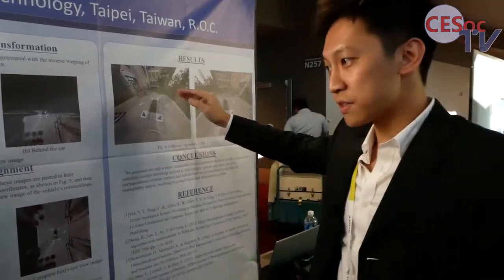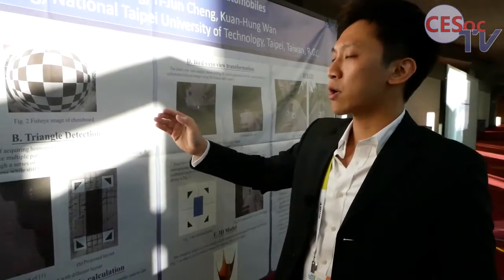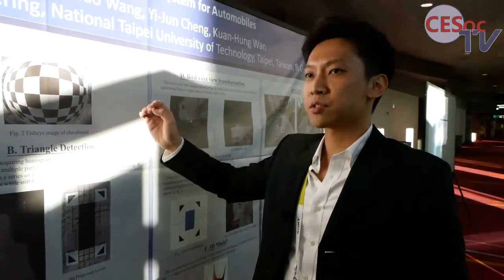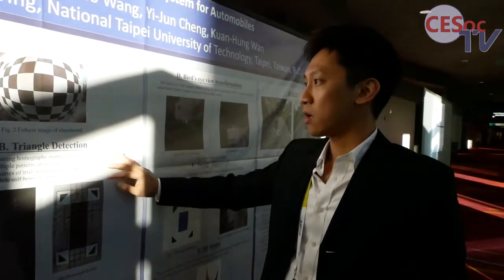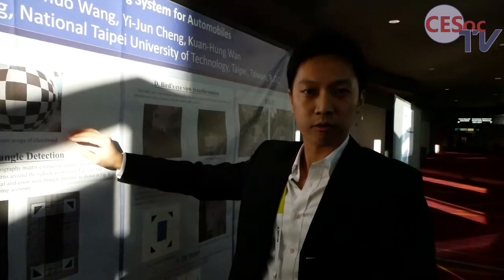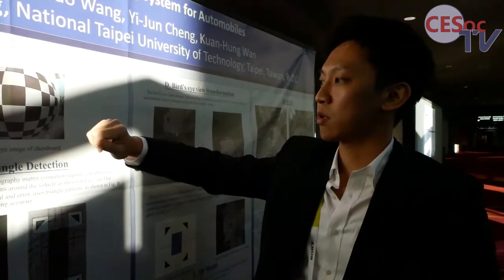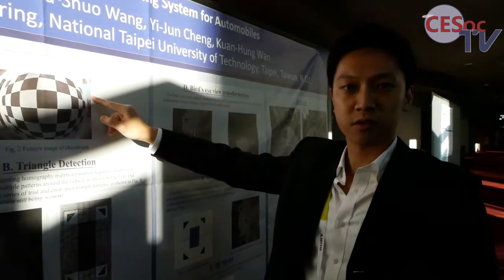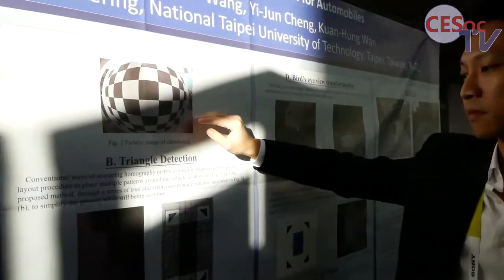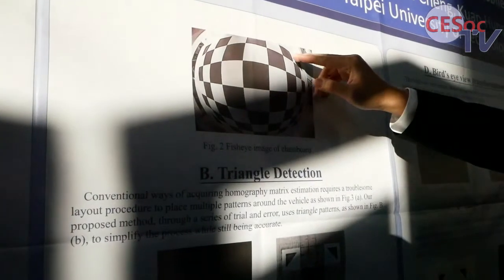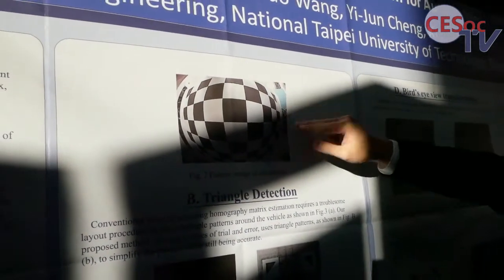This is done because we proposed a better undistorted fisheye image algorithm. Our algorithm puts more weight on the center of the image relative to lesser weights on the outside of the image, because the pixels of the fisheye image are more compressed around that area.